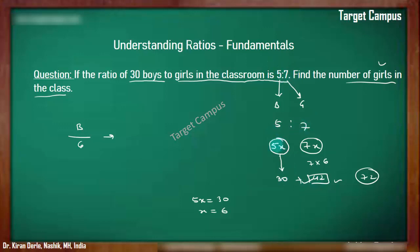To recap: the ratio of boys to girls is 5 is to 7. If there are 5x boys, there are 7x girls. We are given 5x = 30, meaning the multiplying factor is 6. So 7x = 7×6 = 42 girls. I hope you have understood this.